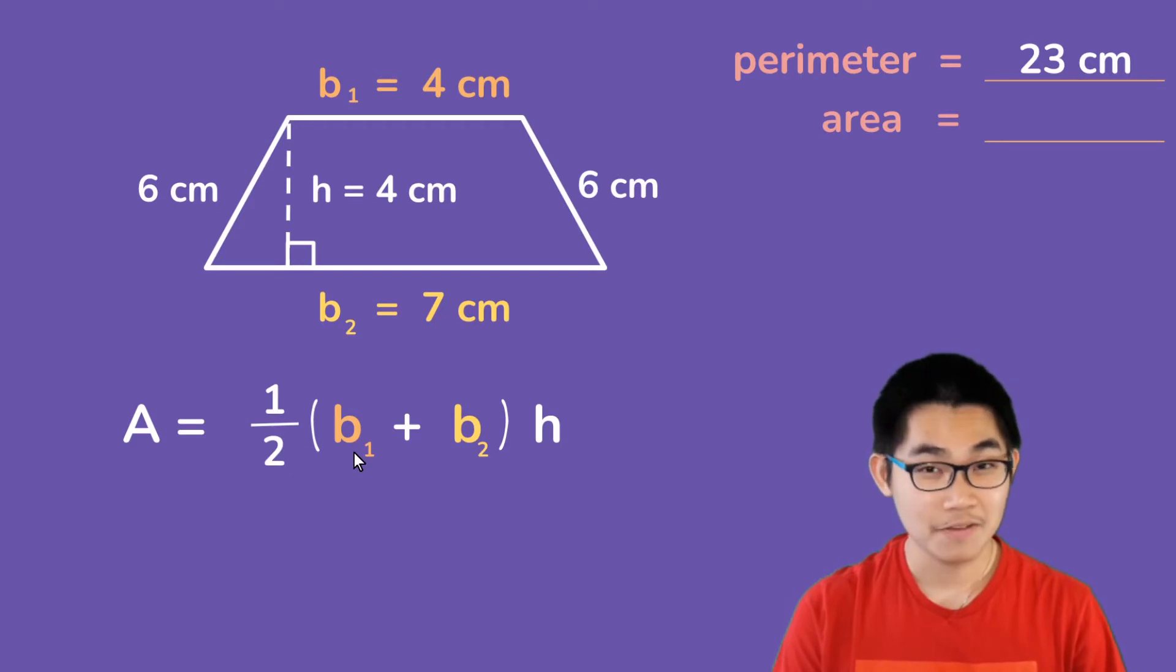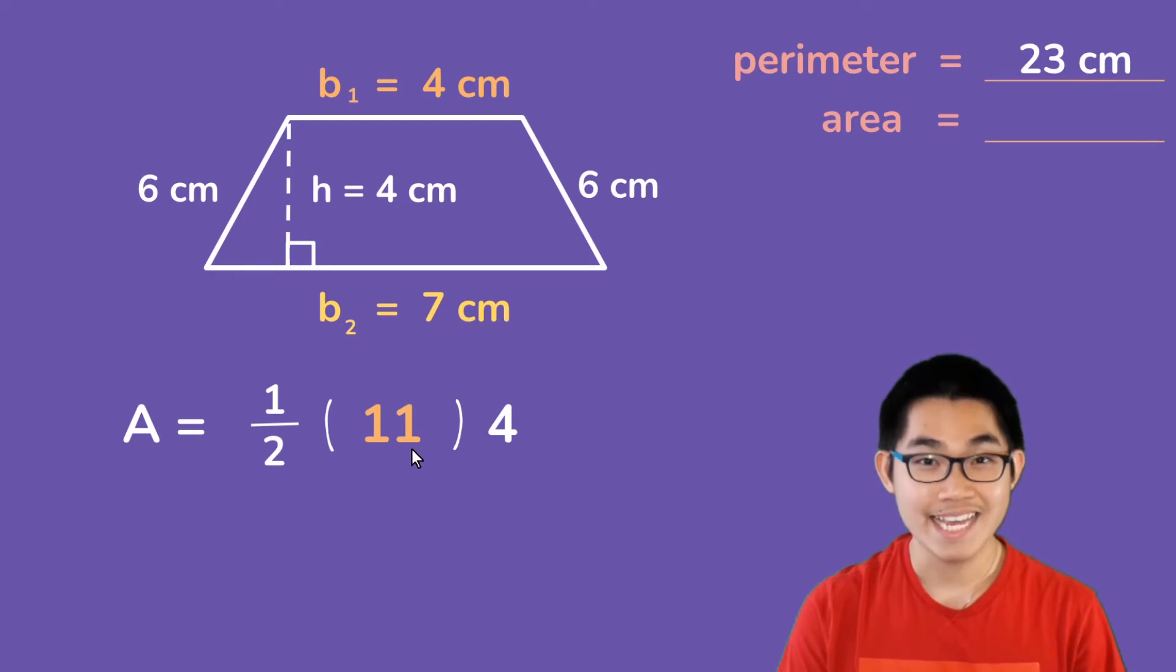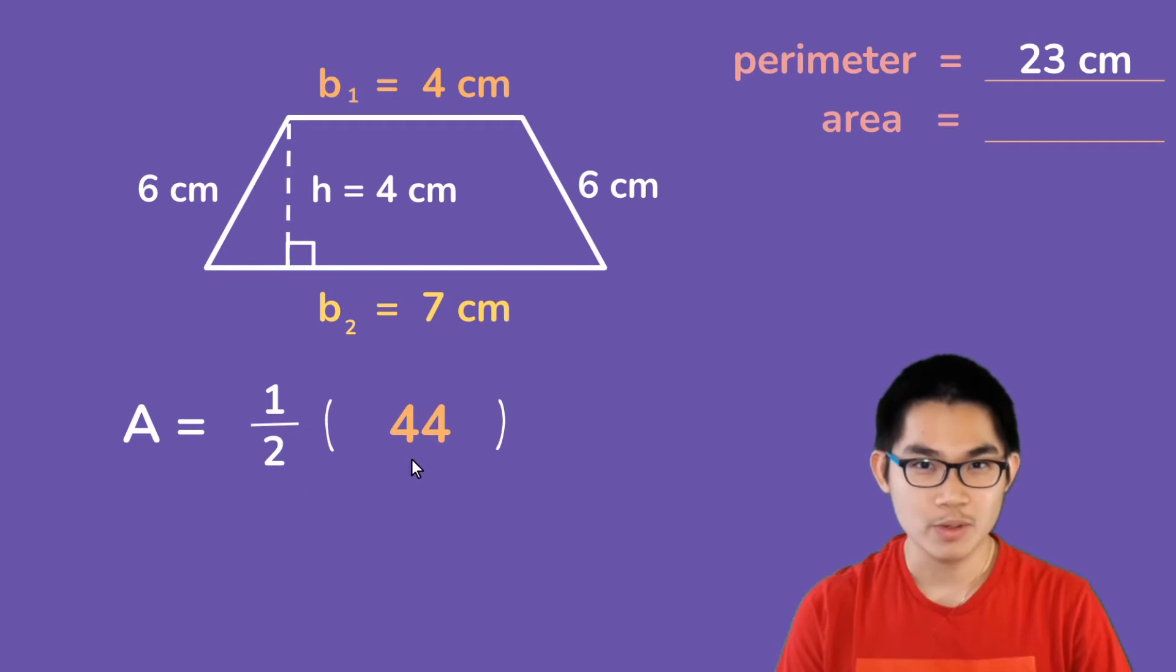So, the first base is 4 centimeters, the second base is 7 centimeters, and the height is 4 centimeters. 4 plus 7 gives you 11, and 11 times 4 gives you 44. And the last step is to take 44 and divide it by 2, and that is equal to 22 centimeters squared.